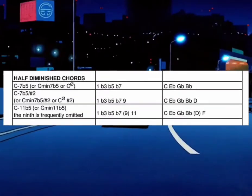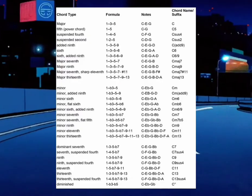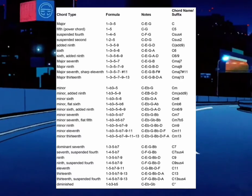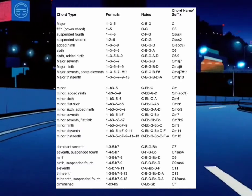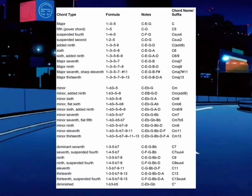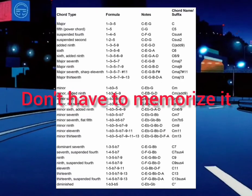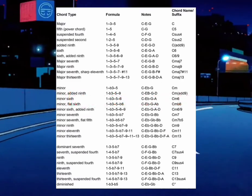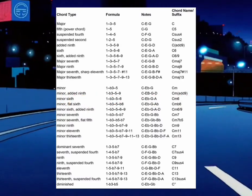So it is the same with chords. There are five main types: major, minor, dominant, diminished, and half diminished, and each one has its own formula. Don't worry — I explain this so that you can understand where chords come from. You don't have to memorize it, just understand it.